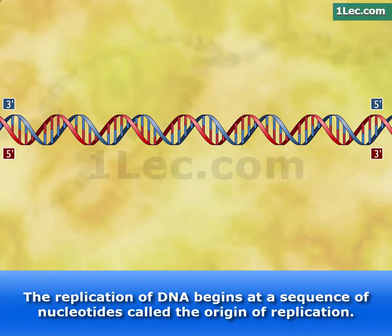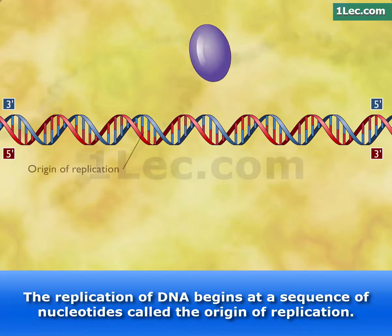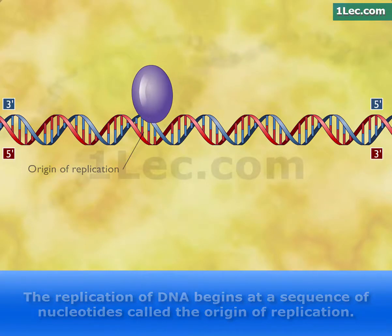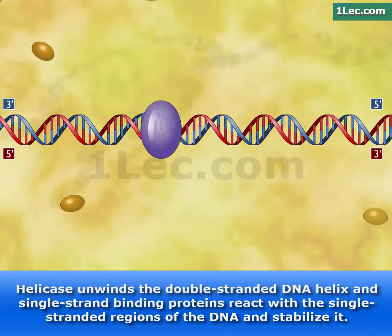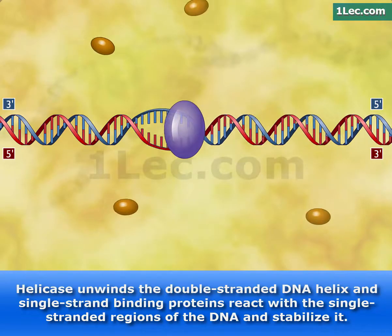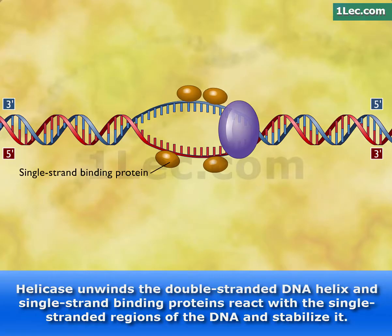The replication of DNA begins at a sequence of nucleotides called the origin of replication. Helicase unwinds the double-stranded DNA helix and single-strand binding proteins react with the single-stranded regions of the DNA and stabilize it.